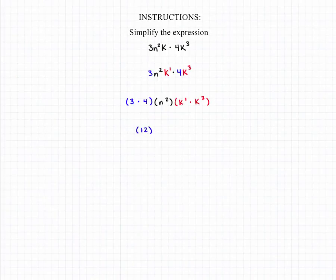This is going to give us 12 multiplied by n squared, and then our rules for exponents say that we're going to add those exponents, so multiplied by k to the 1 plus 3.